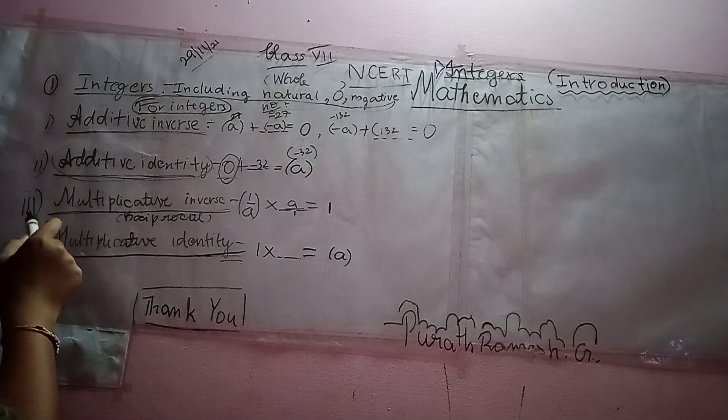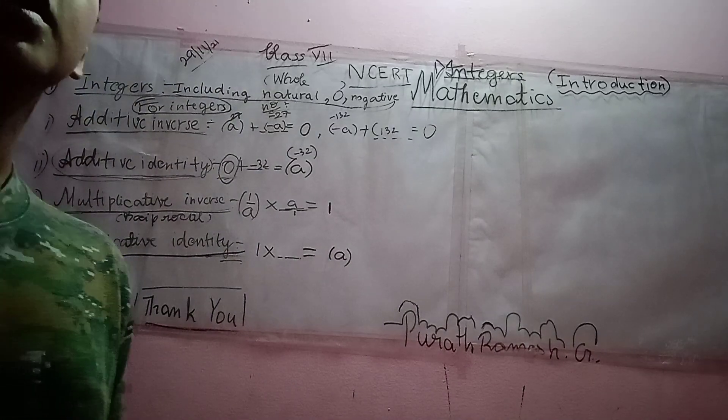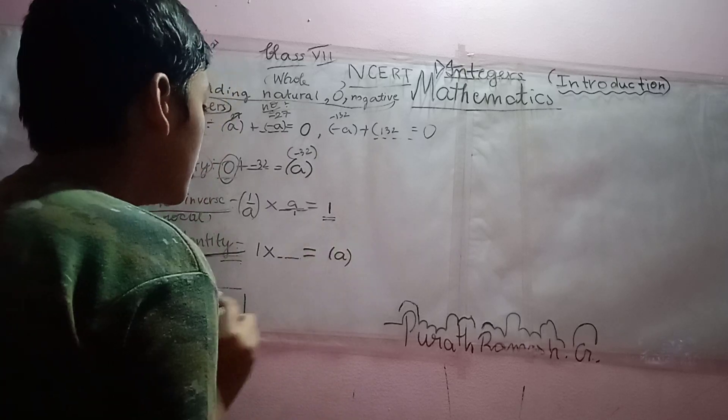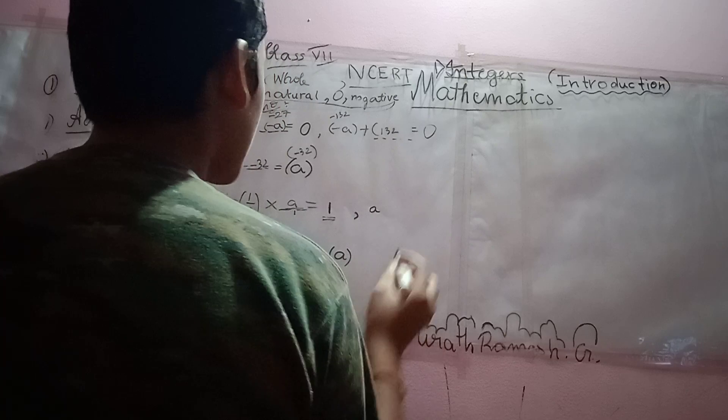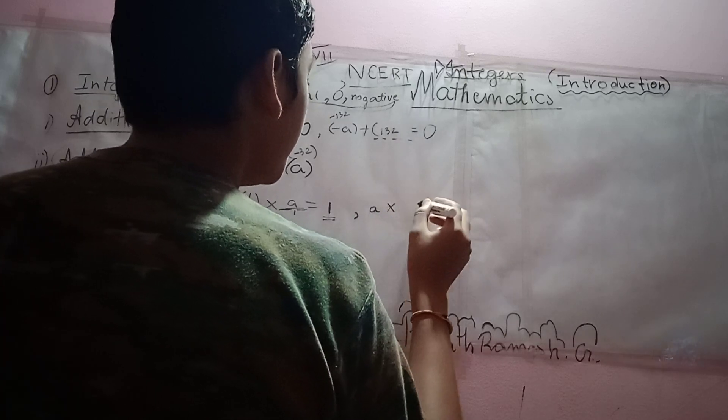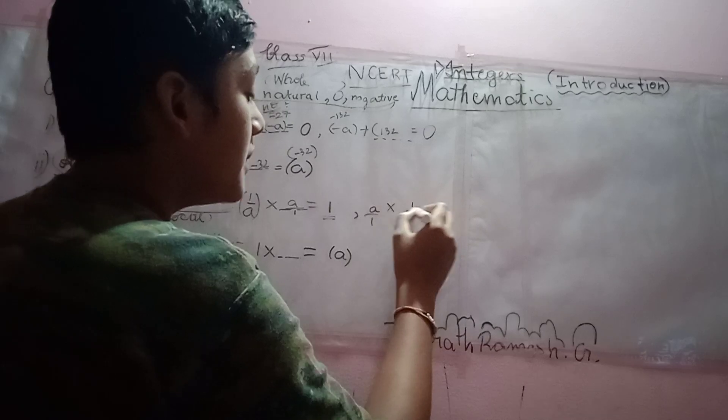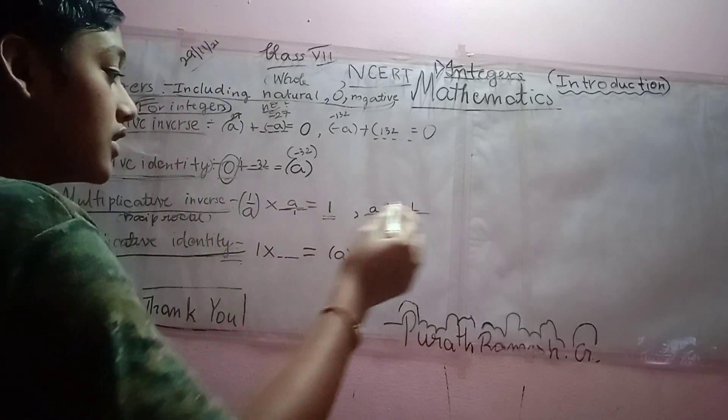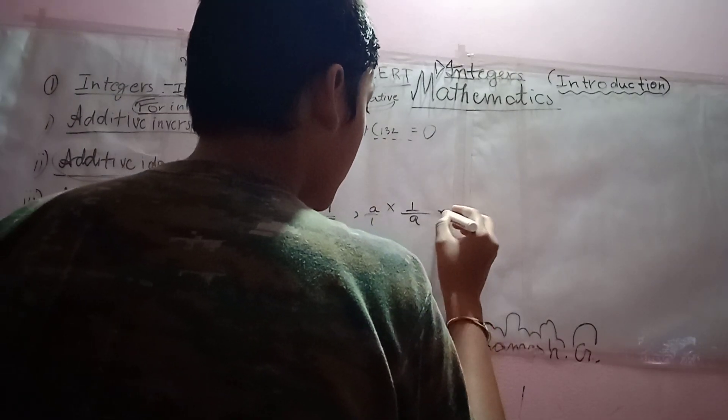So, we can write the definition for multiplicative inverse as any number, if we multiply by another number, we should get the answer as 1. So, we can write one more example as A into, but A by 1 is just A by 1. 1 by A is the reciprocal of A by 1 or the multiplicative inverse of A by 1.